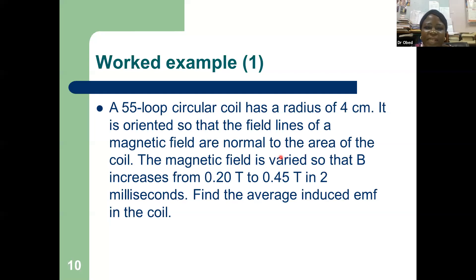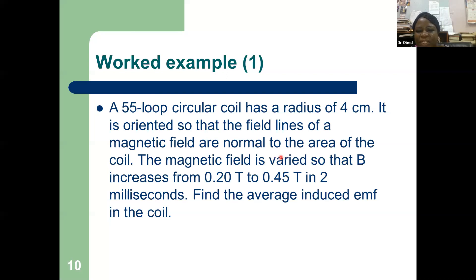There's a worked example on the screen. It says: a 55-loop circular coil has a radius of four centimeters. It is oriented so that the field lines of a magnetic field are normal to the area of the coil. The magnetic field is varied so that B increases from 0.2 tesla...